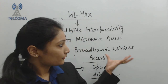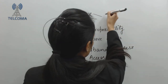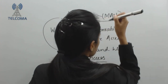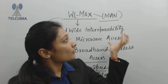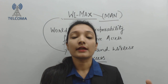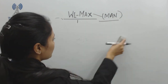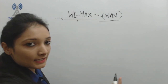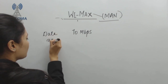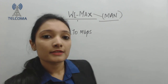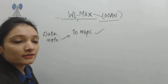WiMAX is a metropolitan area network technique, meaning it is used to provide data services over a higher coverage area compared to existing techniques like Wi-Fi. According to practical standards, WiMAX is supposed to deliver data rates up to 70 Mbps, since the fastest Wi-Fi technology can only deliver speeds of 54 Mbps.